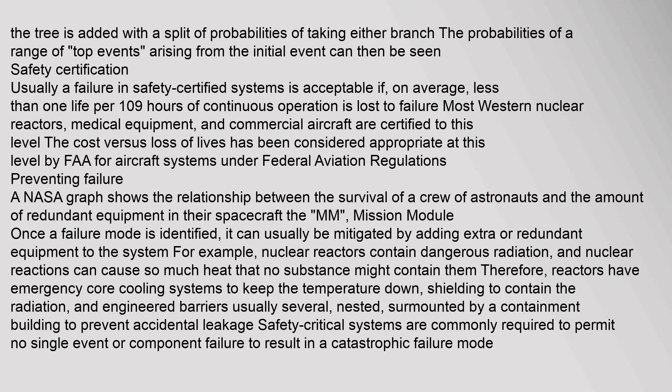A NASA graph shows the relationship between the survival of a crew of astronauts and the amount of redundant equipment in their spacecraft. Once a failure mode is identified, it can usually be mitigated by adding extra or redundant equipment to the system. For example, nuclear reactors contain dangerous radiation, and nuclear reactions can cause so much heat that no substance might contain them.